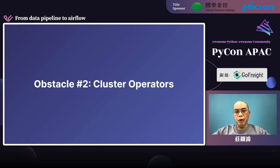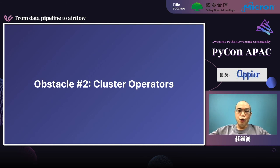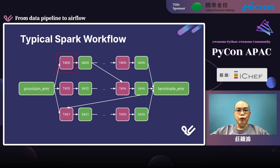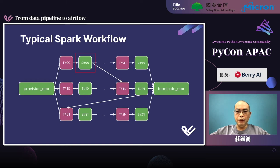Now obstacle number one is overcome, but here comes the second obstacle standing in my way to holidays. In this section, I want to talk about how we handle cluster tasks — to be more specific, how we handle EMR in Airflow. All our cluster tasks, which utilize PySpark, are submitted to one cluster. So a cluster must be provisioned before executing any cluster task. Each task is submitted to the cluster, and once a task is submitted, we need a sensor to block the flow until that job has been completed in the cluster. After all cluster tasks are completed, we need a final task to terminate the cluster.